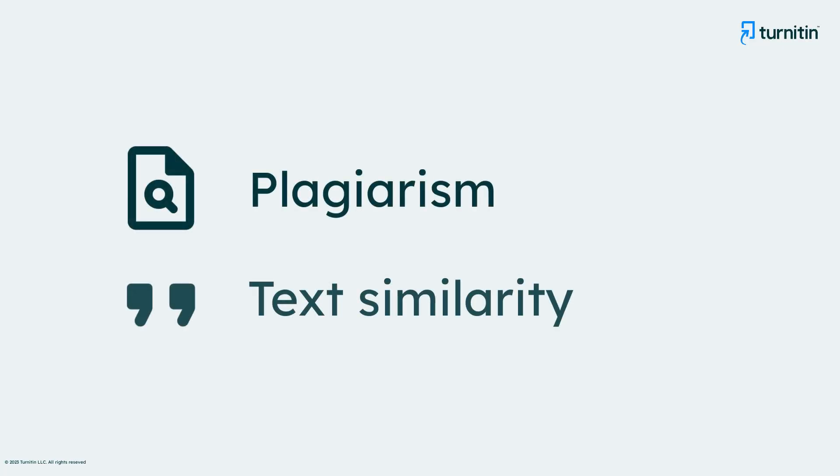Let's start by thinking about the difference between plagiarism and text similarity. Plagiarism occurs when the ideas or words of another are presented as one's own, or when another's work was used but they were not appropriately credited. Text similarity, on the other hand, occurs when the ideas or words of another are simply present in one's work.